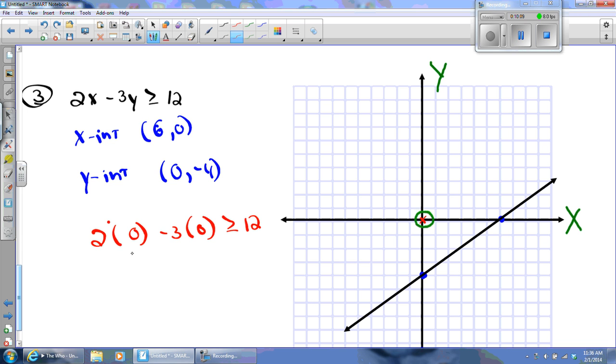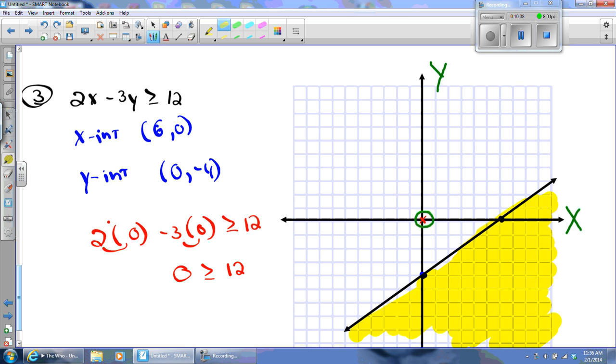Now when I simplify this left-hand side, this is going to become 0. This is going to become 0. And 0 minus 0 is 0. 0 is greater than or equal to 12. Is 0 greater than or equal to 12? No, it is not. So I will shade the side of the line that the test point is not on. And in this problem, the solutions are all the shaded region and the points on the line.